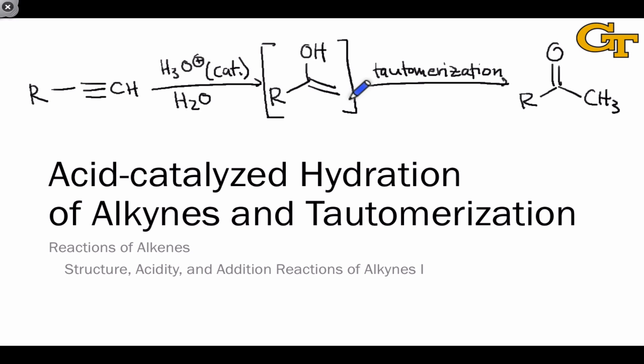Acid-catalyzed hydration of an alkyne involves the addition of OH and H across the atoms of an alkyne. This gives rise initially to an enol intermediate. However, under the acidic reaction conditions, the enol is unstable with respect to an isomer in which there's a carbon-oxygen double bond, the so-called keto form.